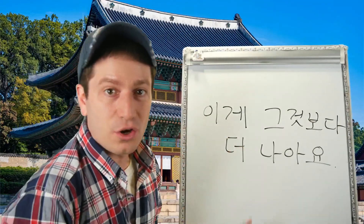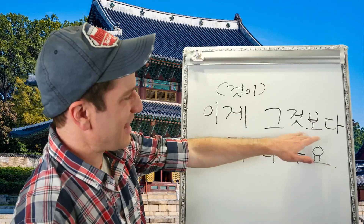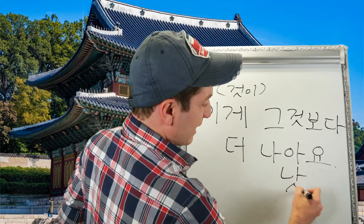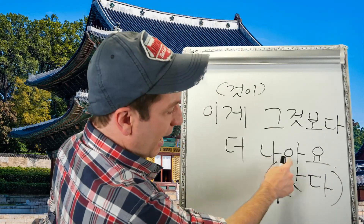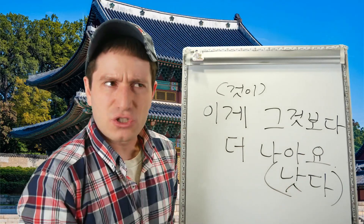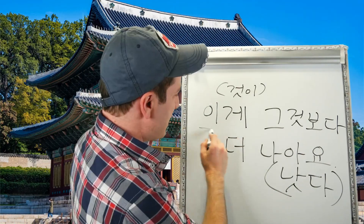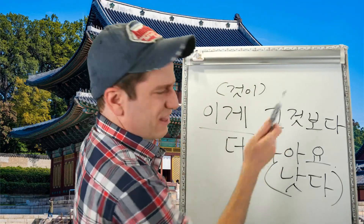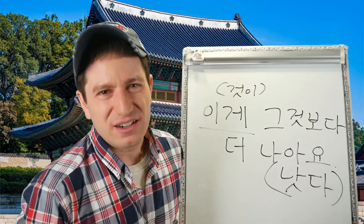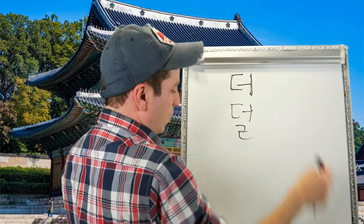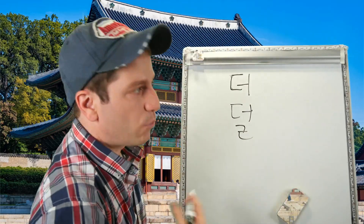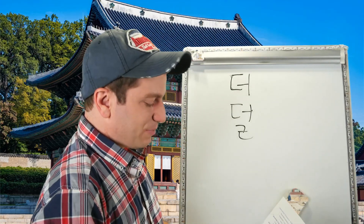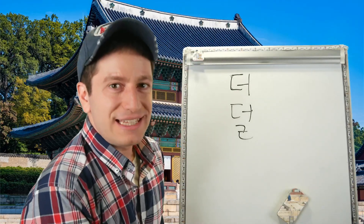이게 그것보다 더 나아요. This comes from the verb 낫다, which conjugates as 나아요 and means 'to be preferable.' So this thing is preferable over that thing — this is better. I should note that 더 and 덜 don't necessarily deal with the quantity of something; they simply indicate the degree or level of something.